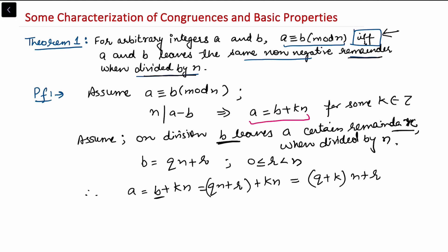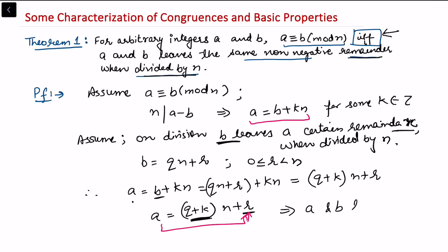Looking at this expression, a equals (q plus k) times n plus r. This means when a is divided by n, the remainder is r only. So this implies that a and b leave the same non-negative remainder when divided by n. Hence this satisfies the forward direction of our proof.